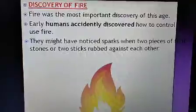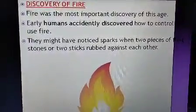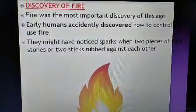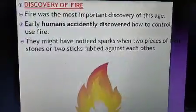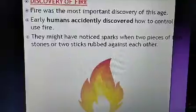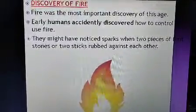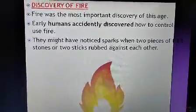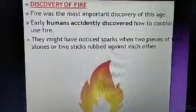The first topic is discovery of fire. In the paleolithic age, one of the most important discoveries was fire. It is said that early humans accidentally discovered fire. They might have noticed sparks when two pieces of stone, flint, or two sticks were rubbed against each other. This is how fire was discovered by early humans.